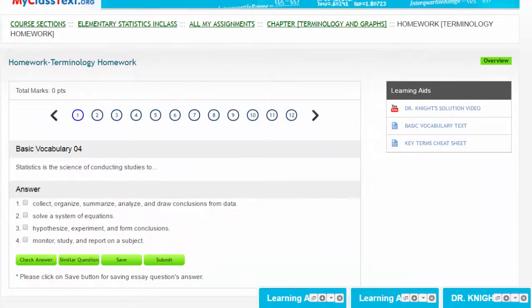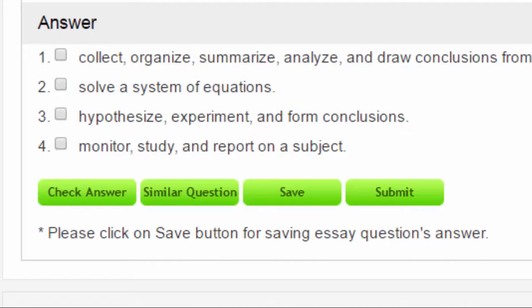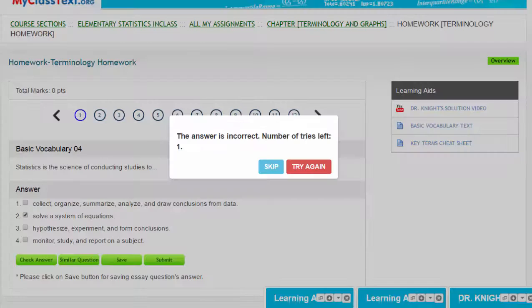This is a multiple choice question where there's only one correct answer. You select the answer you think is correct by checking the box. Use the check answer button to check your answer. When the answer is incorrect, you can try it again or skip and go to another question.